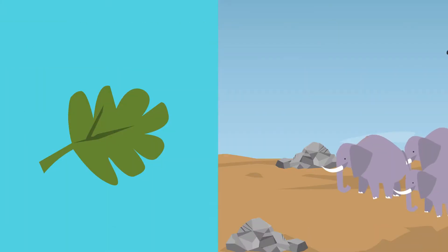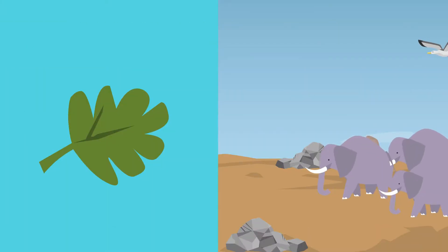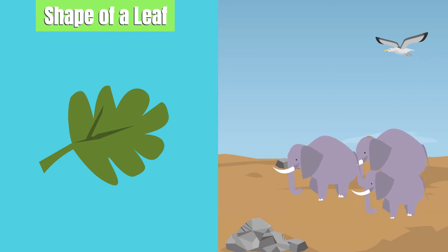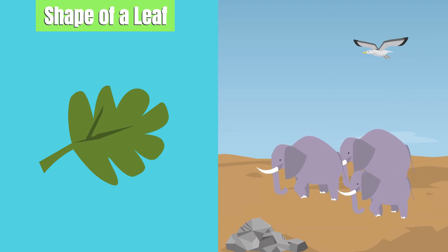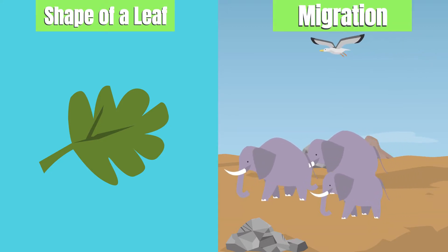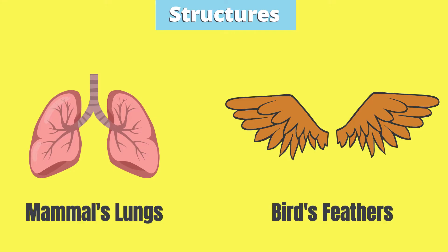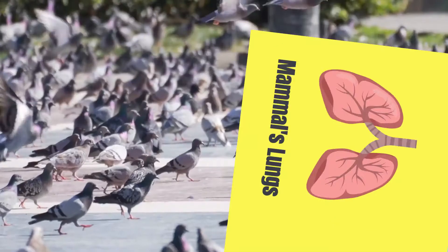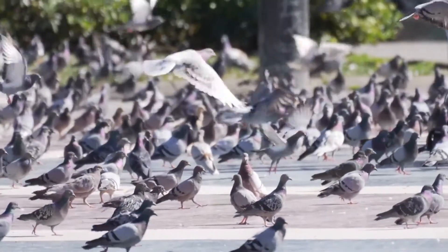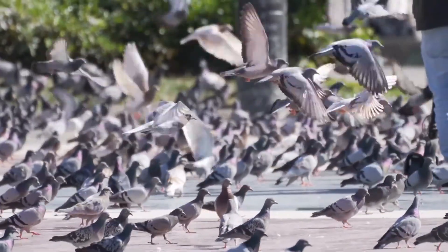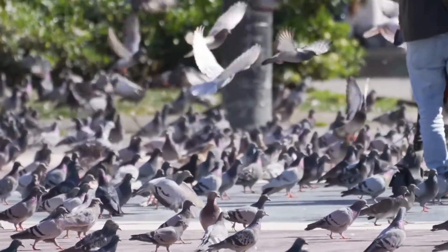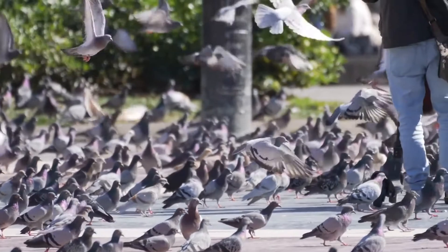An adaptation can be anything from a structural feature, like the shape of a leaf, to a specific behavior, like migration. Structures in both plants and animals can be internal, like the lungs of a mammal, or external, like the feathers of a bird. Each structure has a function — which is what it does, how it works, and how it helps the organism survive.